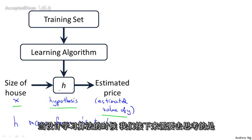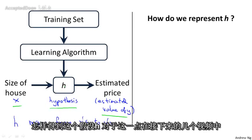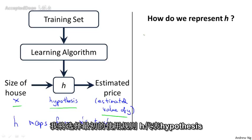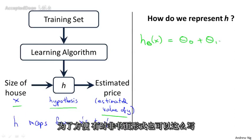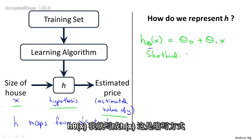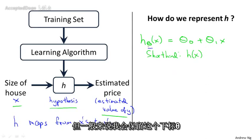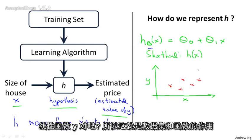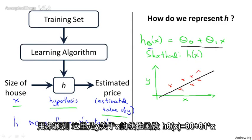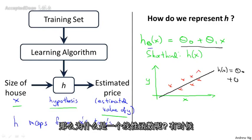When designing a learning algorithm, the next thing we need to decide is how do we represent this hypothesis h. I'm going to represent h as follows: h_θ(x) = θ_0 + θ_1 * x. As a shorthand, sometimes instead of writing h subscript θ of x, I'll just write h(x). What this means is that we're going to predict that y is a linear function of x — this function is predicting that y is some straight line function of x, where h(x) = θ_0 + θ_1 * x.